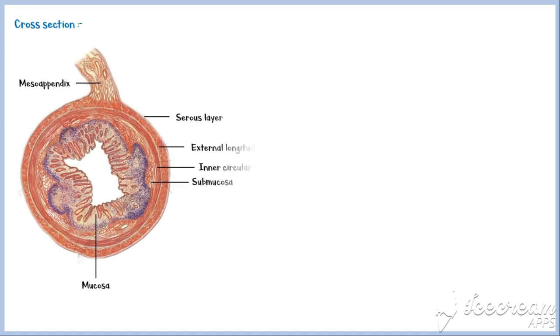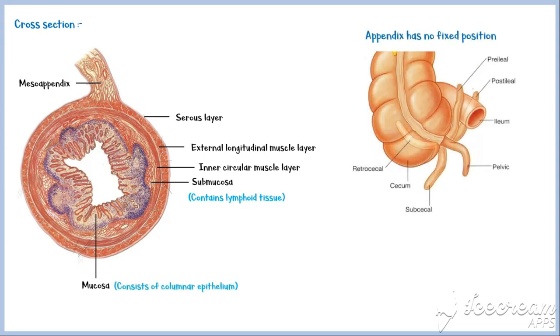On a cross-section, the appendix will appear like this. The submucosa of the appendix contains lymphoid tissue, and the mucosa consists of columnar epithelium. The appendix has no fixed position; therefore, identification of its position is extremely important in surgical procedures.